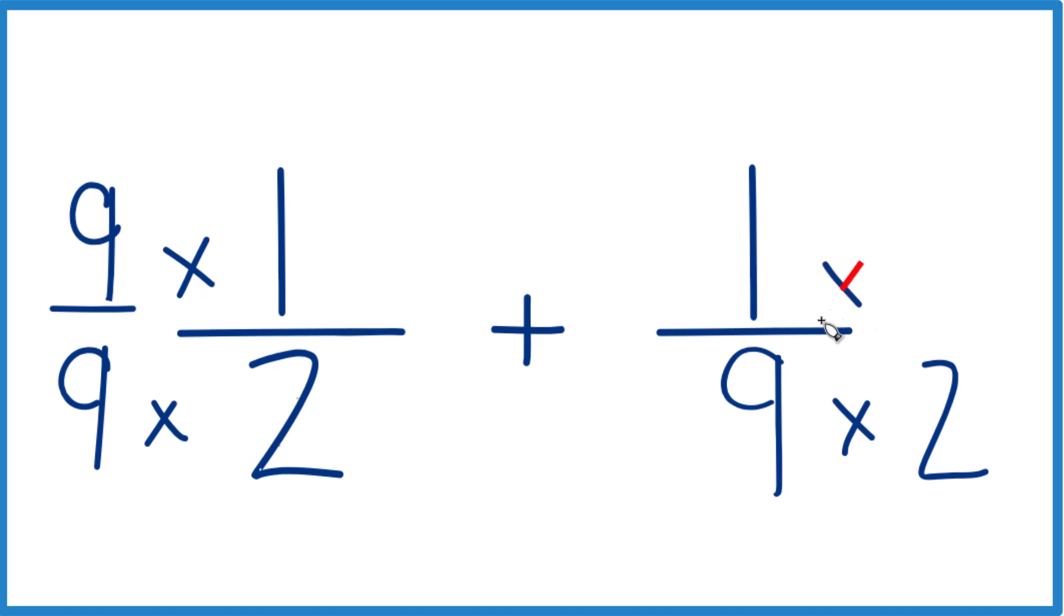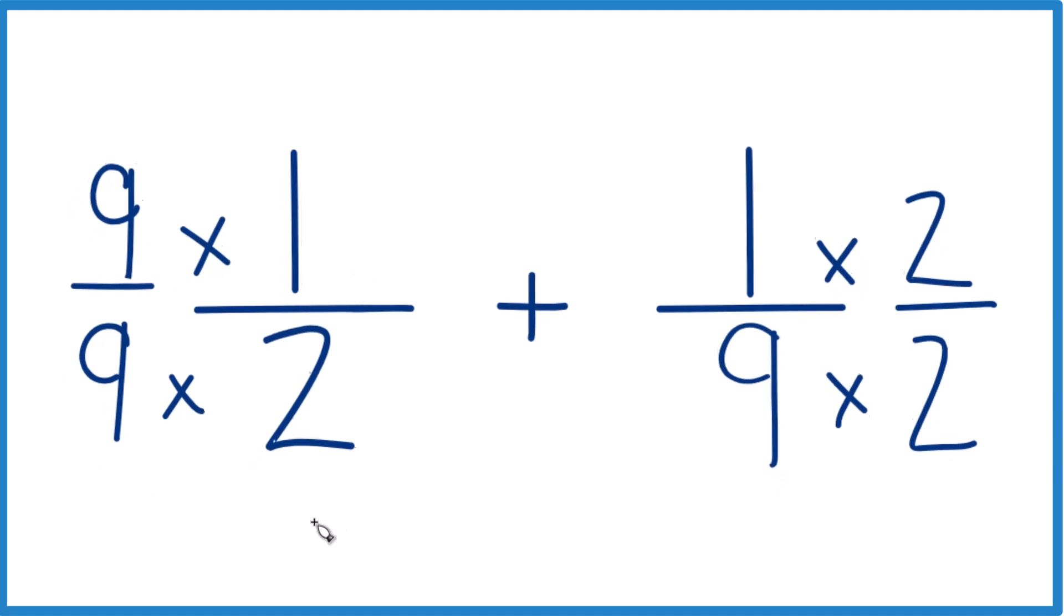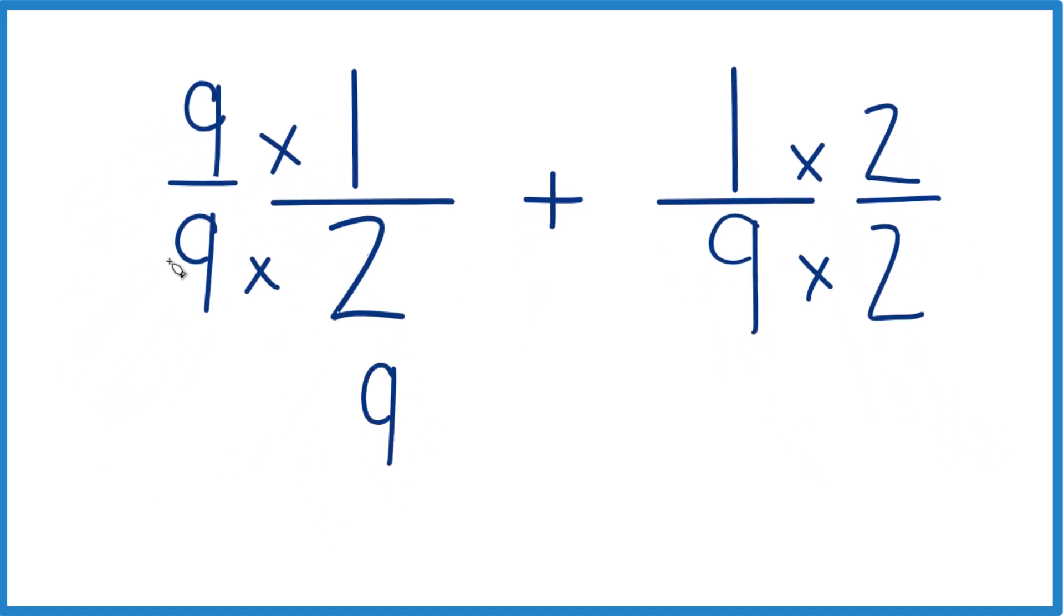Over here, let's multiply by 2. So we have 2 over 2, that equals 1. And now, when we multiply 9 times 1, that's 9. And then 9 times 2, that's 18. Plus 1 times 2, that's 2. And 9 times 2, that's 18.